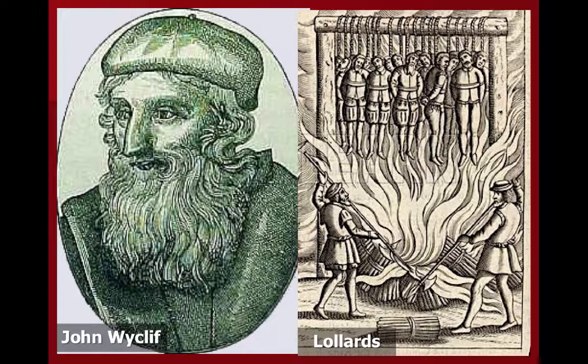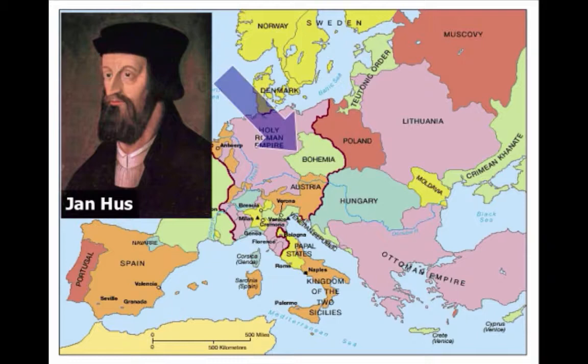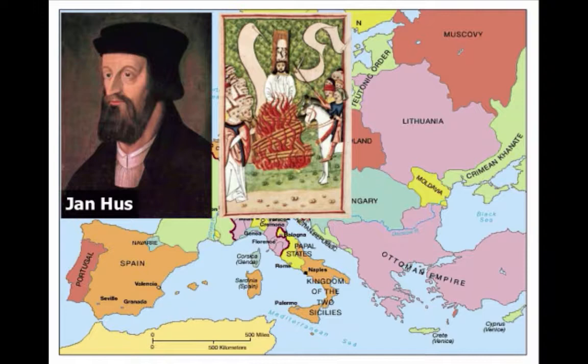Jan Hus, who was influenced by Wycliffe, criticized the church from within Bohemia, which is now the Czech Republic. Unfortunately for him, in 1415 he was convicted of heresy and burned to death at the stake. For the time being, the church had managed to silence its dissidents.